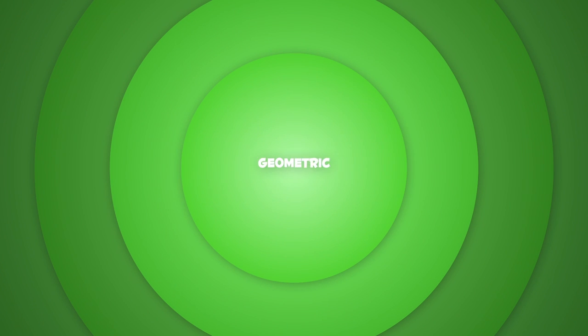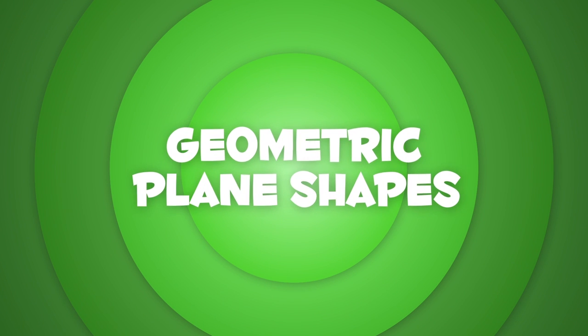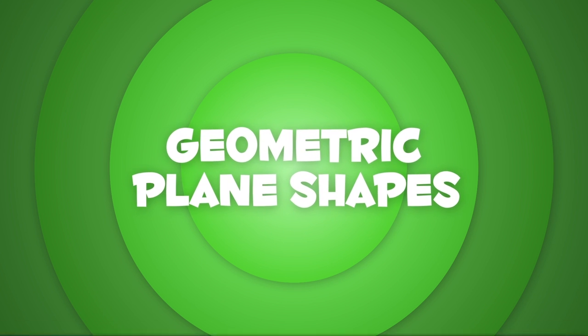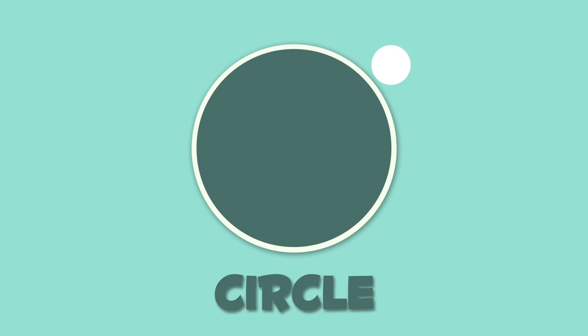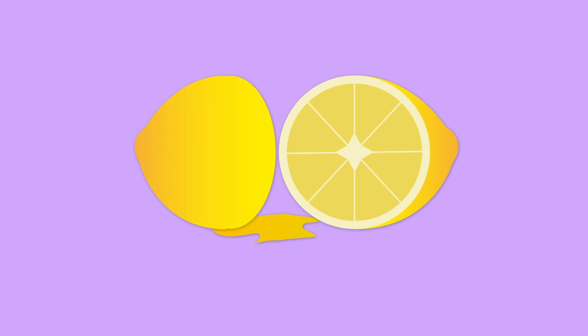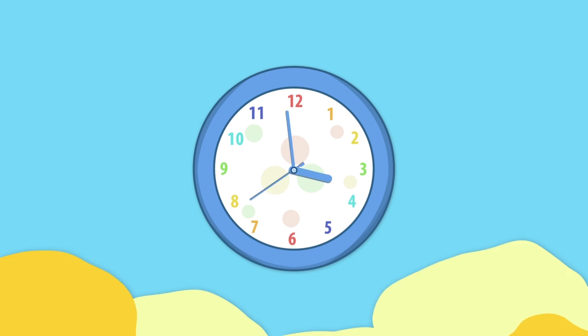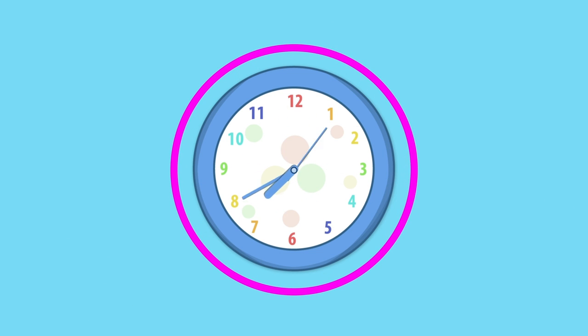Today we're going to learn about geometric plane shapes. Do you know how many types there are? It's a circle — a circle is round, just like this lemon half or this clock.